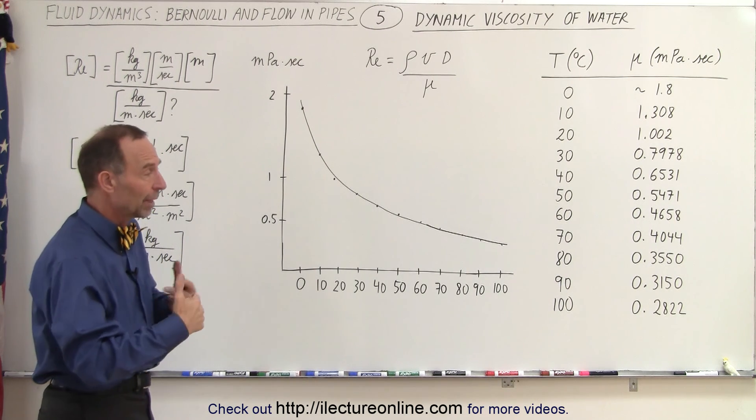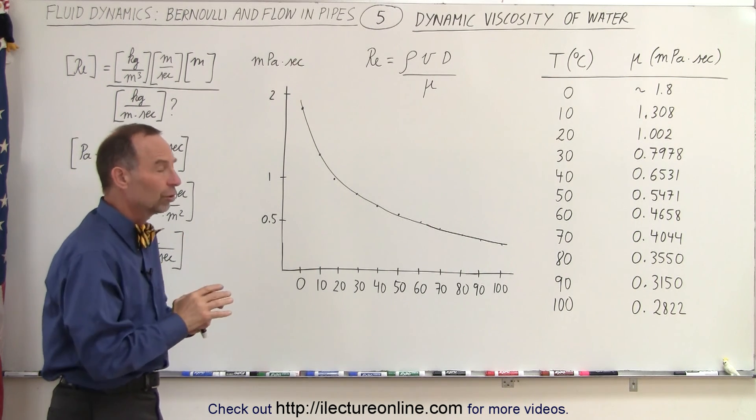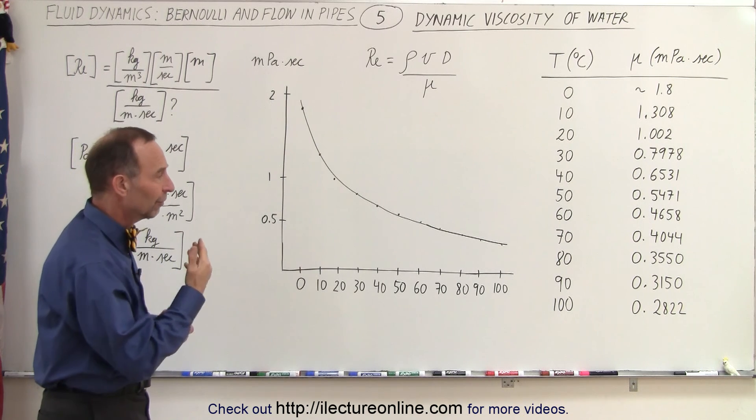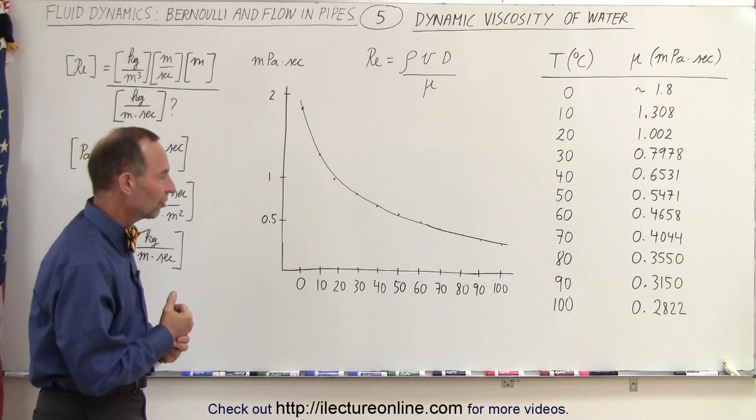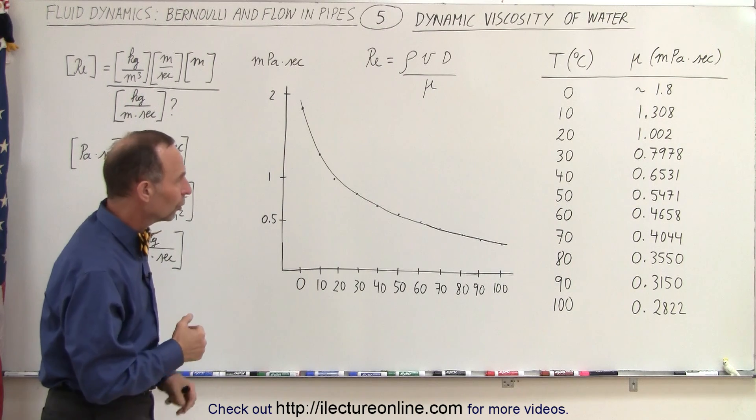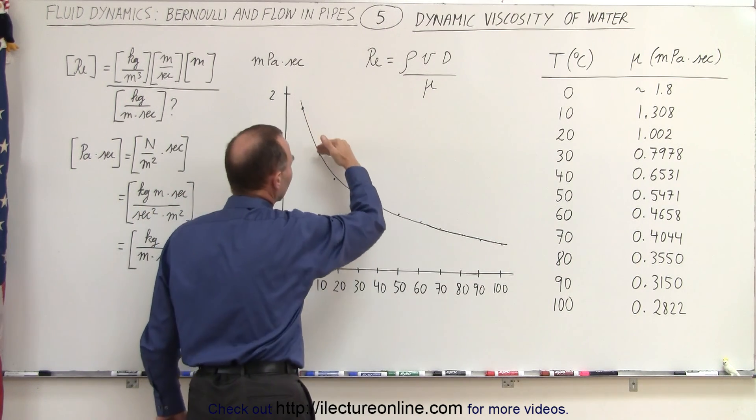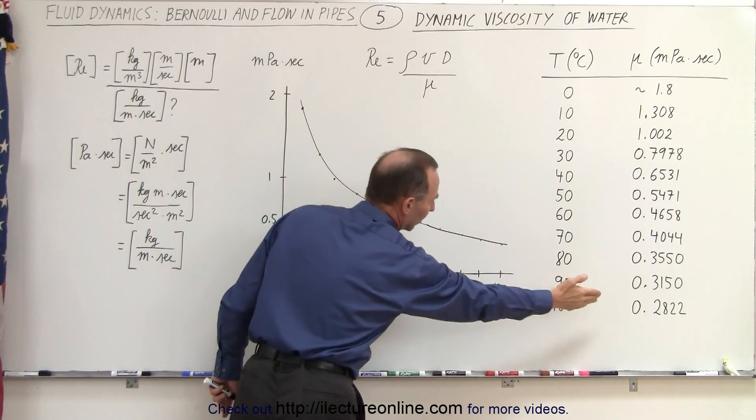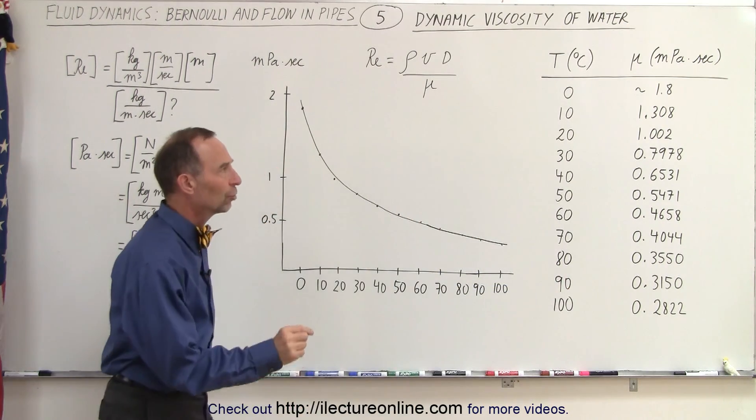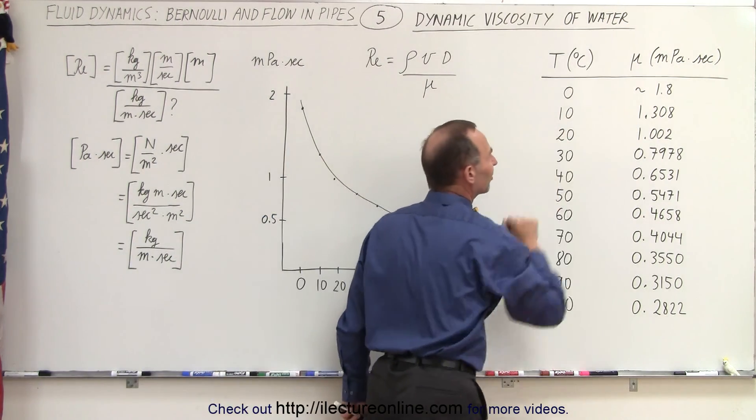And more turbulent flow, that means a greater opposition to the flow, a greater frictional force or frictional losses. So notice that when the temperature is zero degrees, it's about 1.8. And then as the temperature increases, it goes all the way down to about 0.28. And this is in terms of millipascals times seconds.